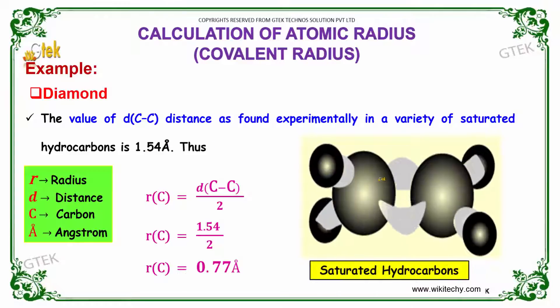What is a saturated hydrocarbon? It has a carbon-carbon link. The value of the bond length distance in a variety of saturated carbons is 1.54 angstrom. The radius of carbon equals bond length of carbon-carbon divided by 2. That's 1.54 divided by 2, which equals 0.77 angstrom.